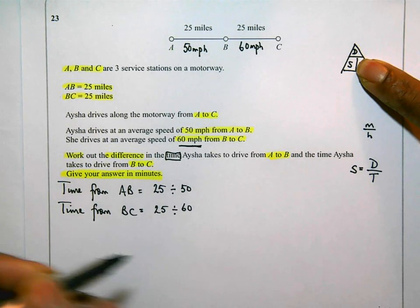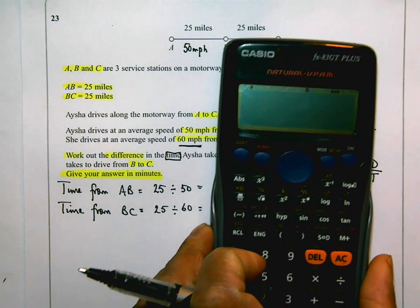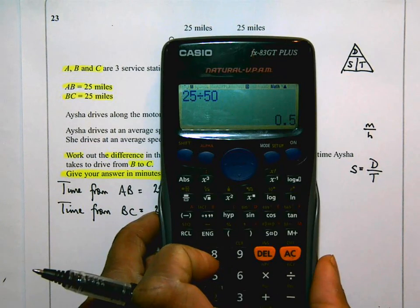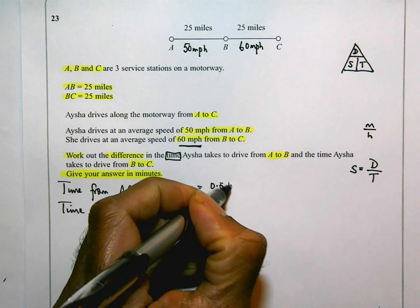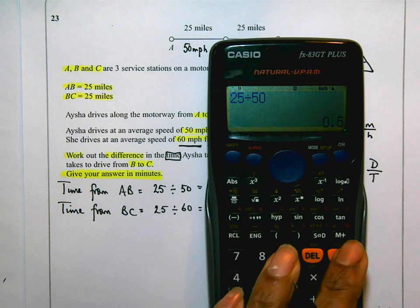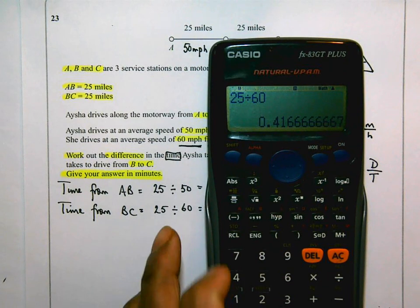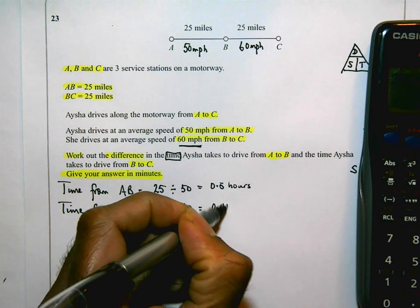Using the calculator: 25 divided by 50 gives 0.5, so that's 0.5 hours for A to B. Then 25 divided by 60 gives 0.41666... recurring hours for B to C.